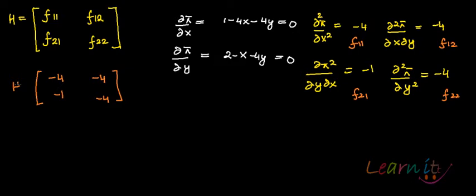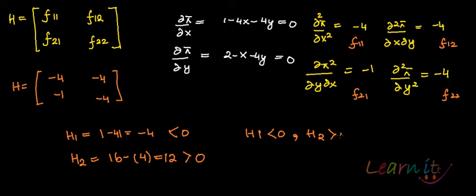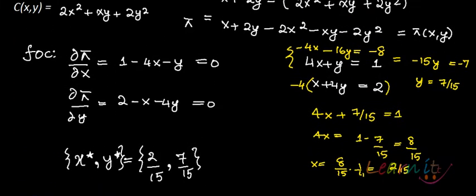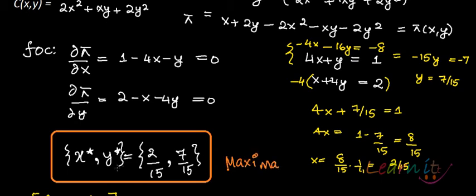Now we evaluate the leading principal minors. H1 = minus 4, which is negative. H2 = (minus 4)(minus 4) minus (minus 1)(minus 1) = 16 minus 4 = 12, which is greater than 0. Since H1 < 0 and H2 > 0, this signals a point of maxima. Therefore, X = 2/15 and Y = 7/15 are indeed the profit-maximizing values, satisfying both the first and second order conditions.